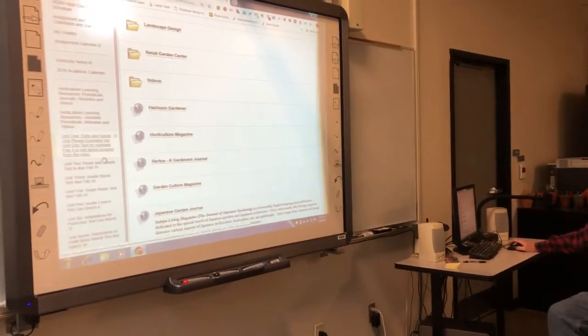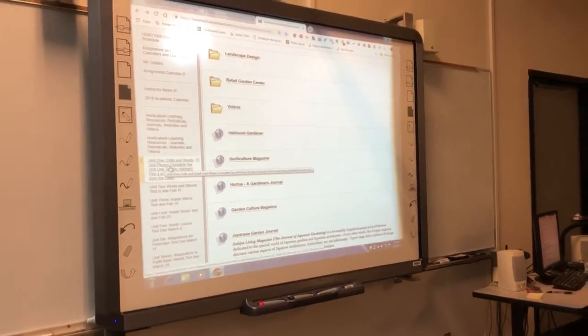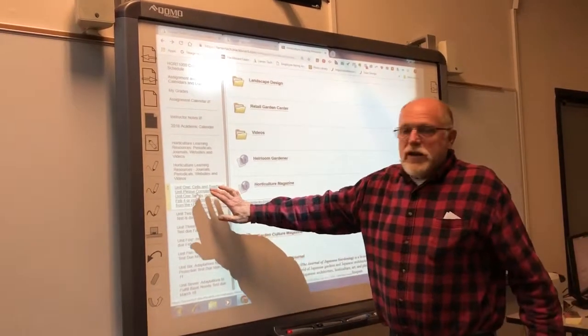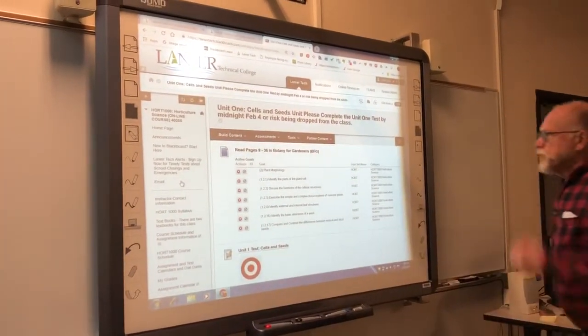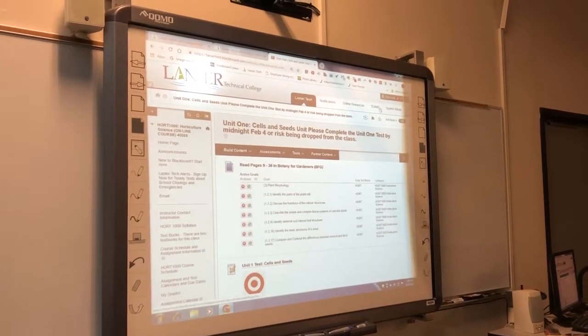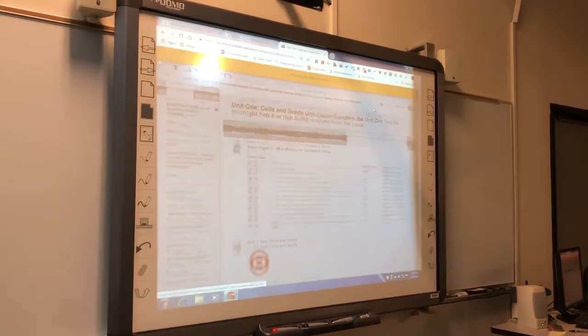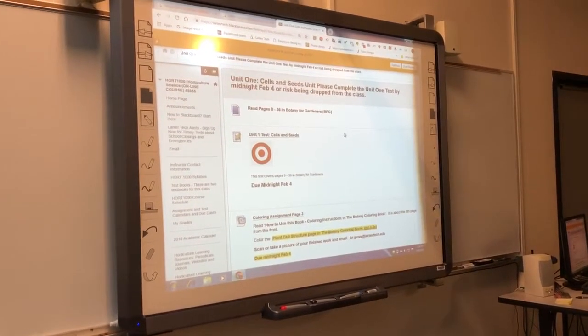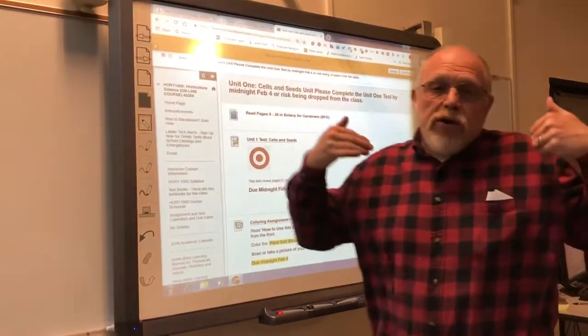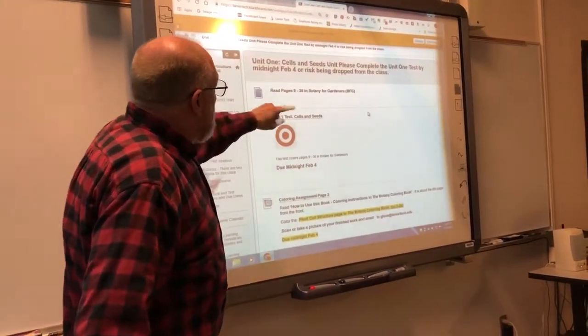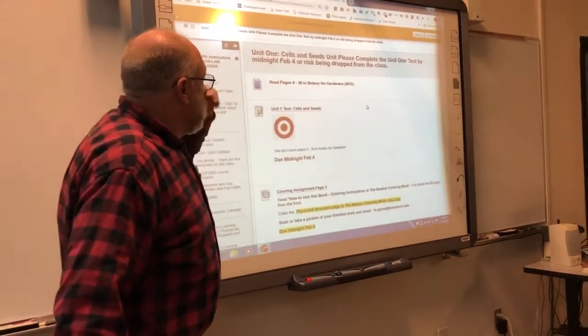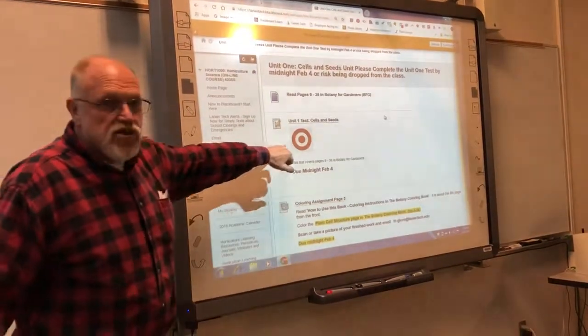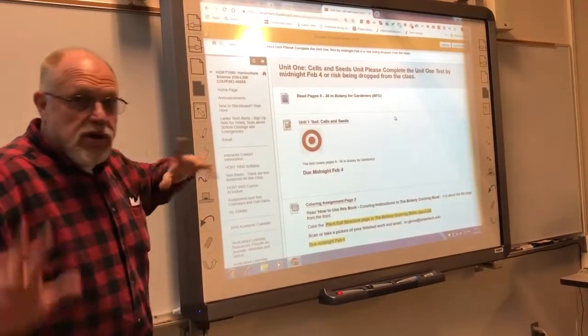Okay, now here is where the meat of the course is. It's a little bit further down. See where it says unit one right here? Unit one cells and seeds. Please complete the unit one test by midnight, February 4th. So I've got even another reminder right here telling you that's when the test is due for that. We'll click on that. So this is unit one and there are 14 units for the semester. There's a unit per week that you're going to be using here. And up here in the top, it'll give you the reading assignment. Read pages nine through 36 in Botany for Gardeners. Unit one cells and seeds. This is your test. Unit one test. You'll see a big target right there. You click on that to take the test. I'll show you more on the test in a minute.